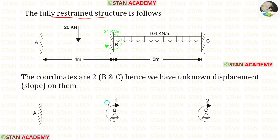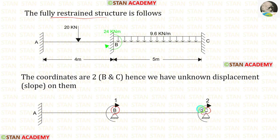Now let us make the coordinates diagram. In this analysis there are two coordinates, at points B and C, because at these points only we have the unknown displacement — that is, the slope.